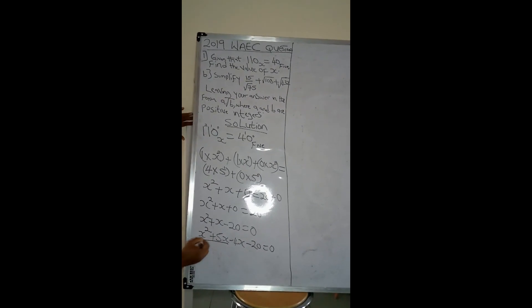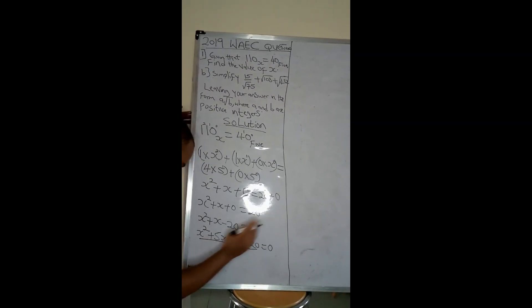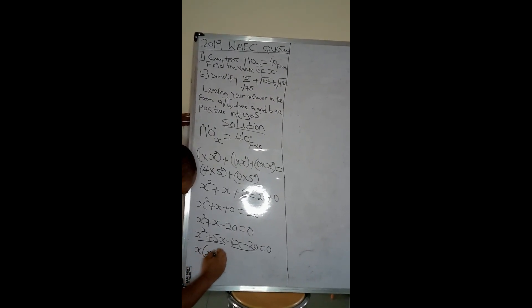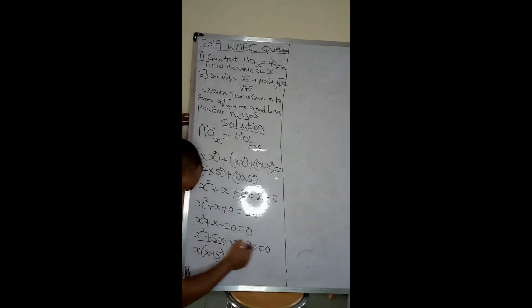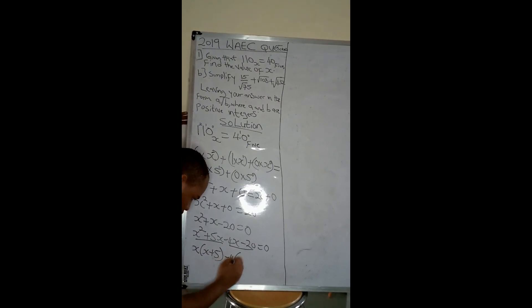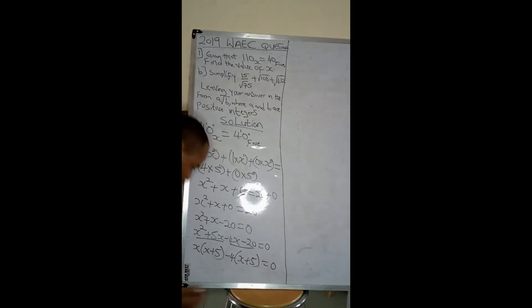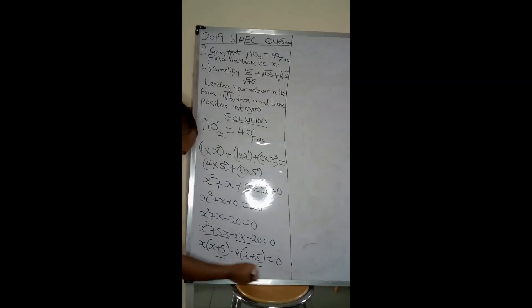Now I'll take these two together, I'll take these two together, I'll factorize. If I factorize, I'll have x into x plus 5. If I factorize here, I'll have minus 4 into x plus 5, equal to 0.